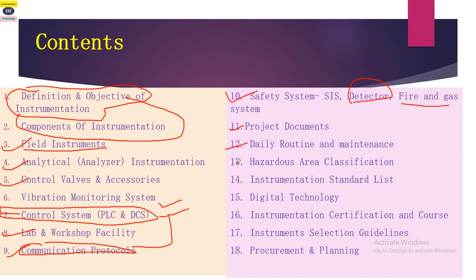The thirteenth point is hazardous area classification, which is useful if you work in a hazardous area where any substance present could come into contact with air and a heat source, potentially causing a blast or igniting a fire. We will discuss hazardous area classifications in detail.